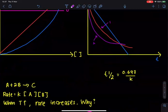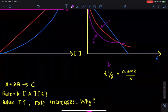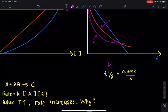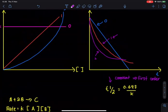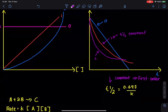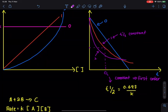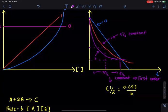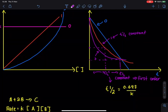To distinguish first order from second order on a concentration-time graph, we use the concept of half-life. Half-life is the time taken for the concentration to fall to half its initial value. If the half-life is constant every time — meaning equal time intervals for each halving — then it is a first order reaction. That is the key identifier for first order.